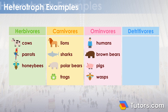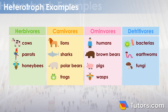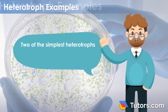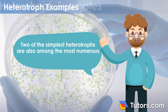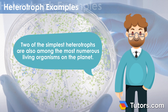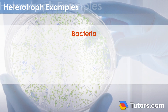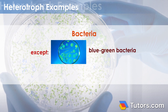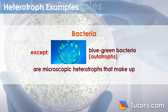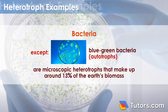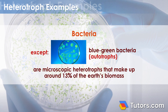Detritivores are organisms such as bacteria, earthworms, and fungi. Two of the simplest heterotrophs are also among the most numerous living organisms on the planet. Bacteria — except blue-green bacteria, which are autotrophs — are microscopic heterotrophs that make up around 13% of the Earth's biomass.